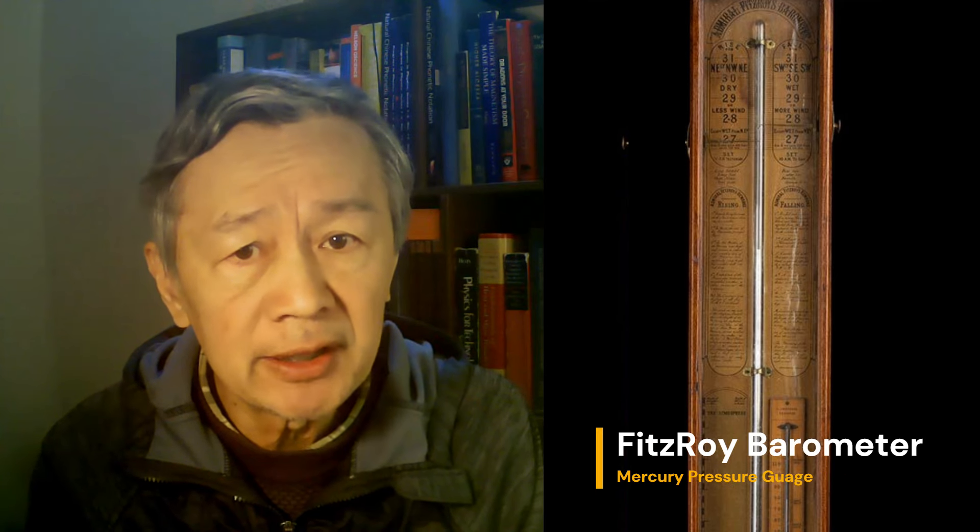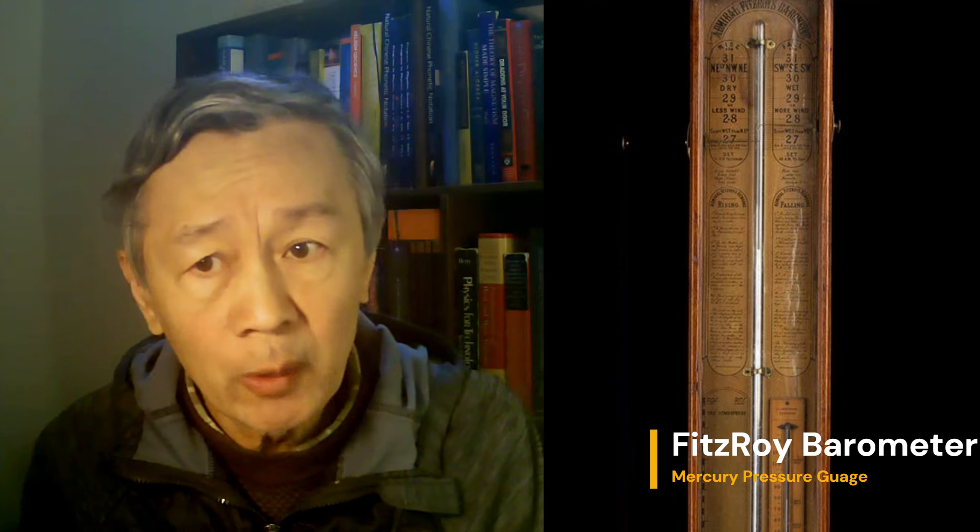Using mercury in tube with one end closed, you can create vacuum of height of 76 cm near the sea level. That's why one atmosphere equals 760 mm of mercury.